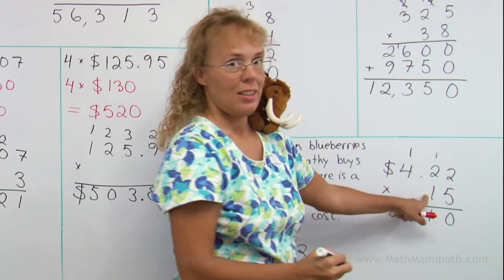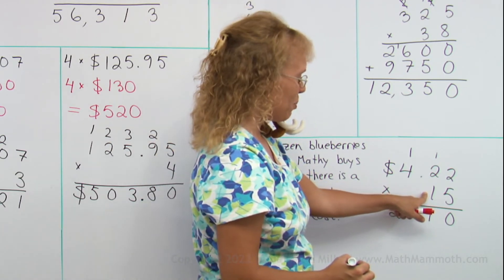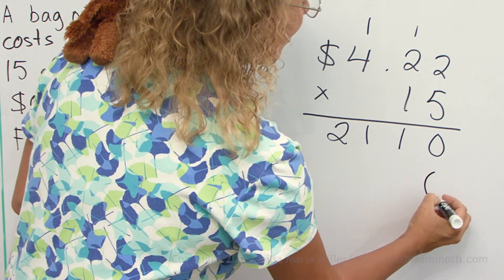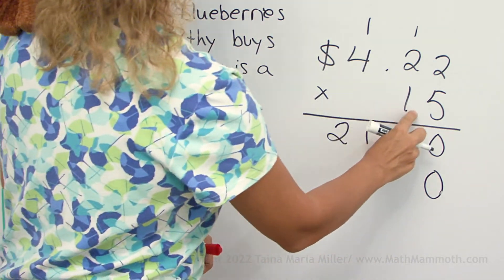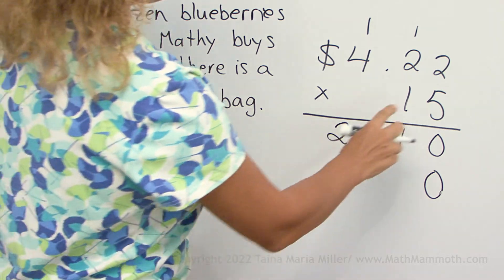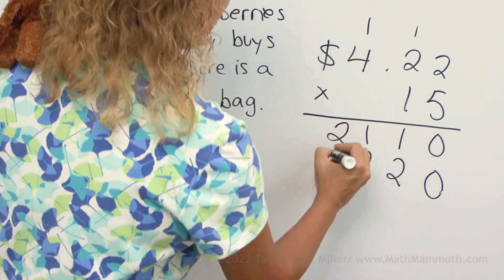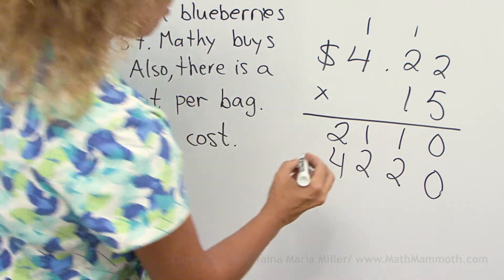And then multiply by 1, so to speak. But remember what to do here, we need to first put this 0 here because we're actually multiplying by 10. So 1 times 2, 1 times 2 and 1 times 4. So that was easy Matty, you made an easy problem.